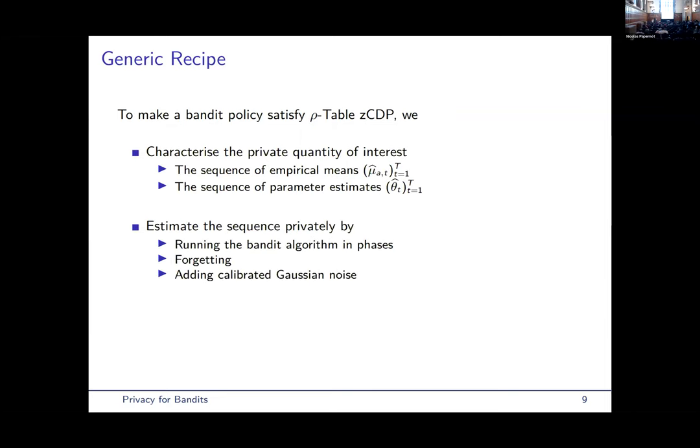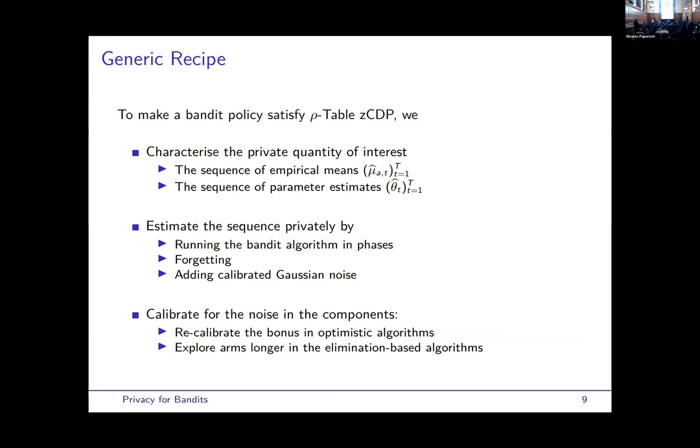So, to estimate the sequence of quantities privately, we follow the following procedure. First, we run the bandit algorithm in phases. This is already the case for the elimination-based algorithm, but for UCB and linear UCB, we have some doubling tricks to make them run in phases. Then, the private quantity of interest is only computed on the samples collected in that phase. So, we forget about the samples collected in older phases, and we add calibrated noise. And the idea of estimating the sequence this way is that our quantities are computed on non-overlapping sequence of rewards. This helps to avoid extra costs due to composition theorems. And finally, since now our quantities are noisy, we need to calibrate for the noise in the components of our algorithm. This means that we need to recalibrate the bonus in optimistic algorithms and explore arms longer in the elimination-based algorithm.